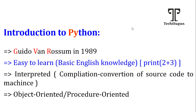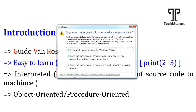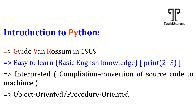A programming language may come under object-oriented programming or procedure-oriented programming. In a procedure-oriented programming language, programs are written only by using functions — for example, the C programming language. In an object-oriented programming language, programs are written by using classes and objects — for example, Java and .NET. Python comes under both object-oriented as well as procedure-oriented; it is a bilingual language that supports both features.